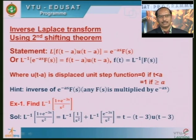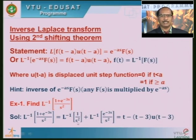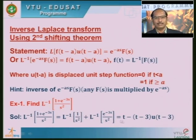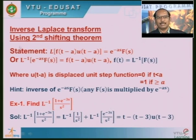Consider the example: find L inverse of (1 + e^(-3s)) / s². There is a term e^(-3s) in the function. I divide each term by the denominator, giving L inverse of 1/s² plus L inverse of e^(-3s)/s². Splitting into two terms: the first term is simple - it is the inverse of a standard function. We know L inverse of 1/s² is t, since L{t} = 1/s². For the second term, e^(-as) is multiplied with a = 3, so we refer to the second shifting theorem.